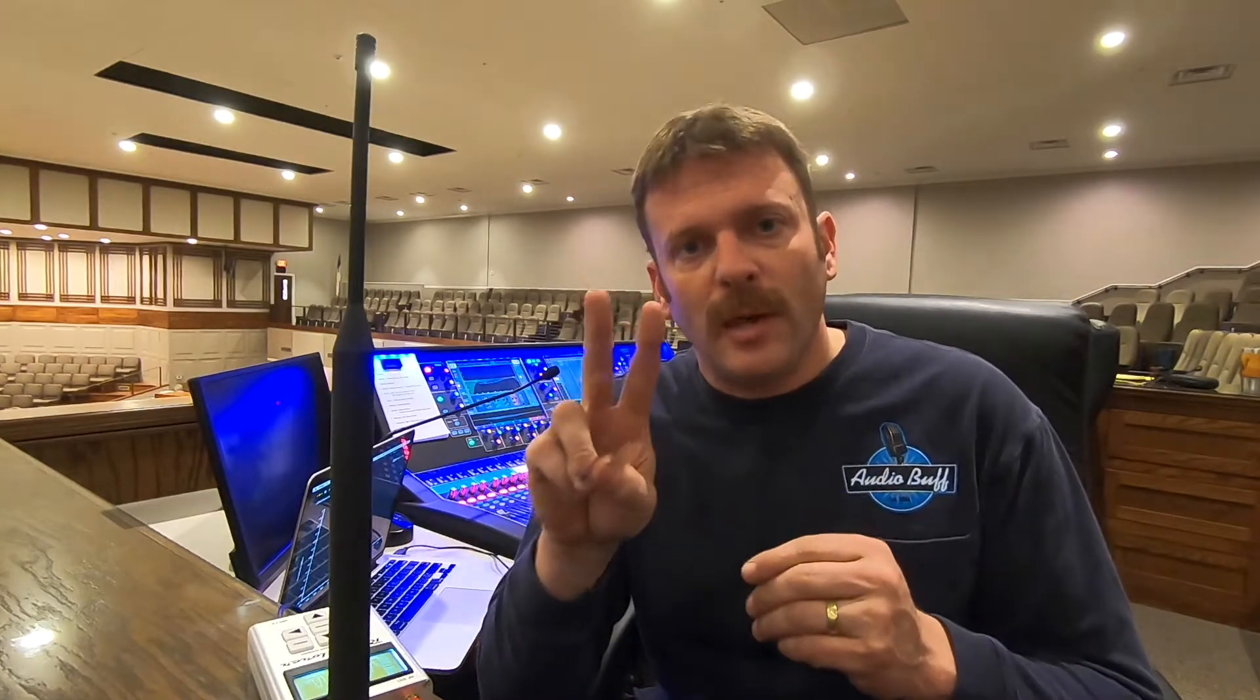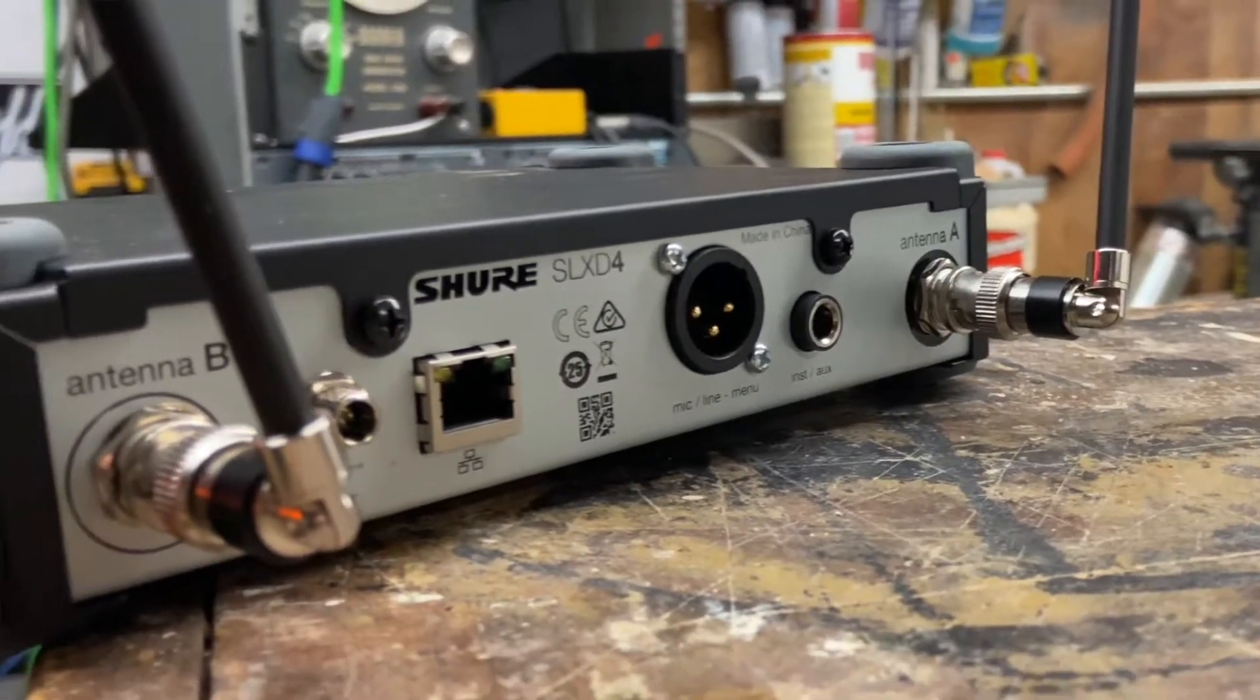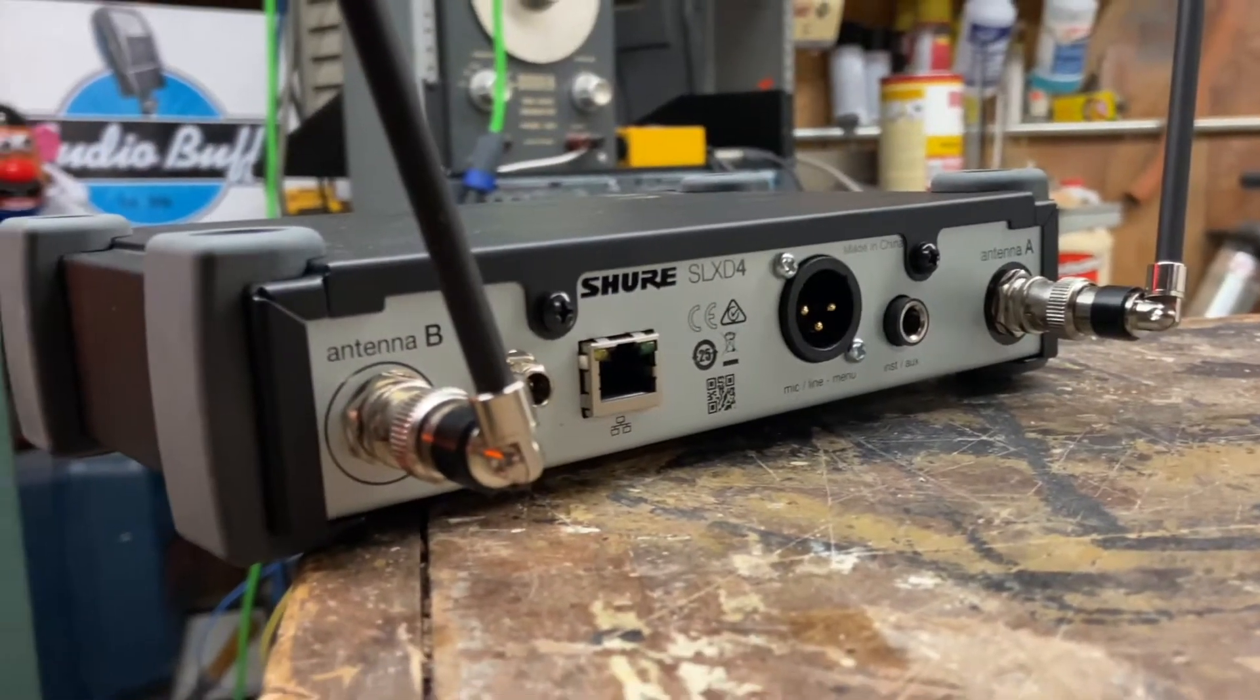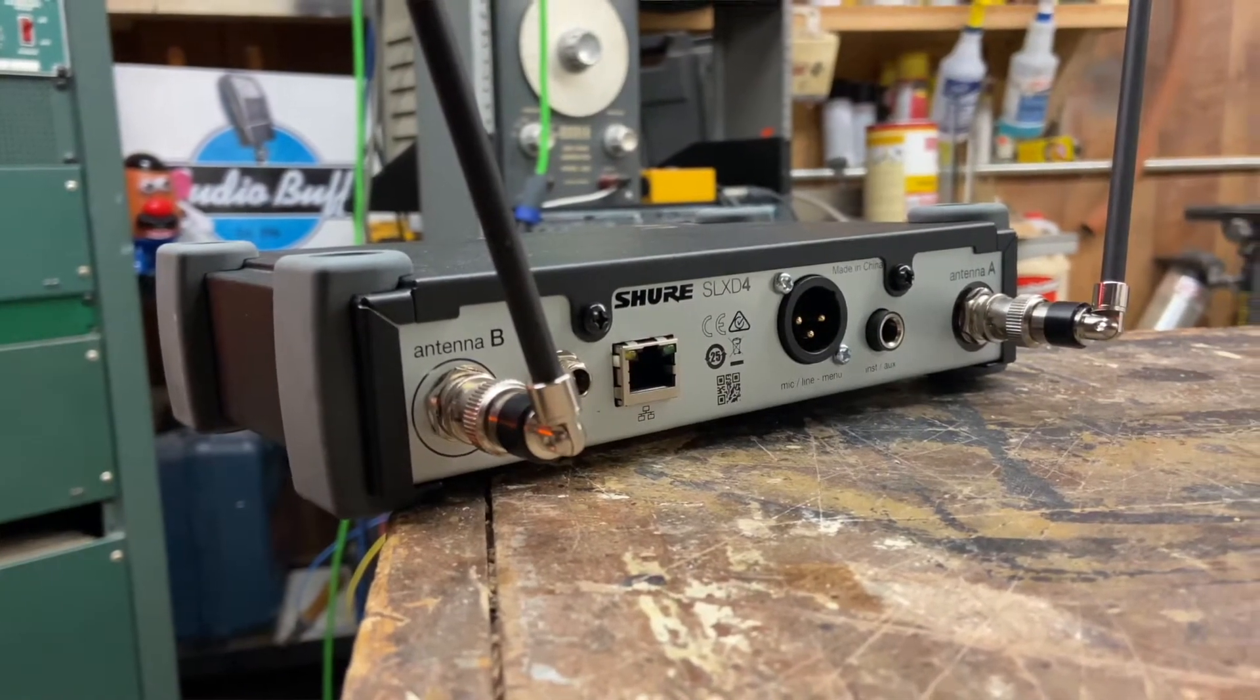Now, most of our modern wireless mics have diversity antennas, or two antennas that are picking up independently. That receiver is choosing the best or strongest signal, A or B. That's also another reason why we turn our antennas in a V-shaped formation so we can try to work with some of those multi-path polarizations.